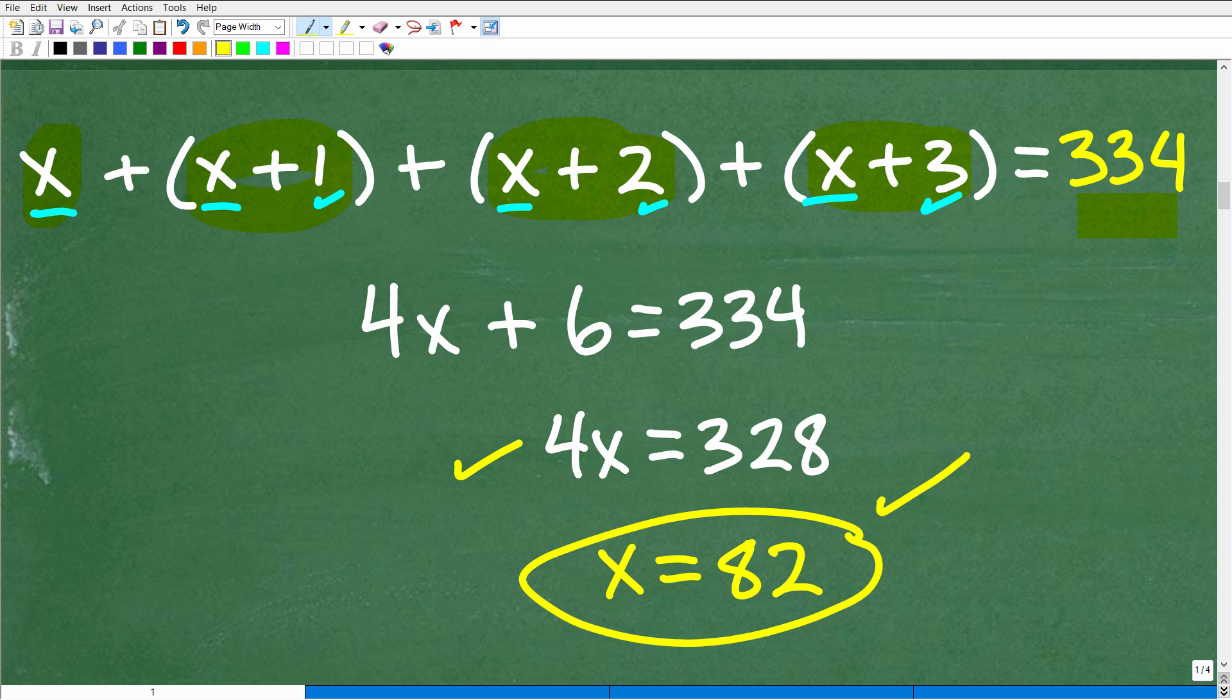So what is that? Well, that is our first integer. And we know that we have four consecutive integers. If it starts with 82, let's just use common sense. Well okay, 82, the next one is going to be 83, the next one is going to be 84, etc.